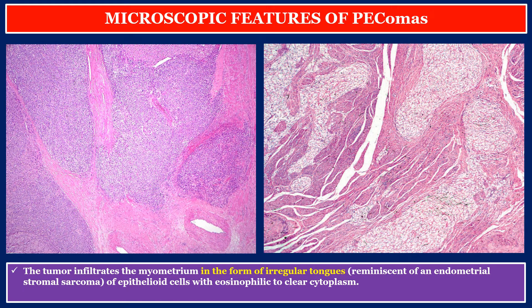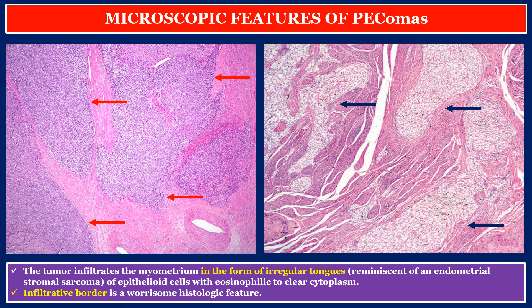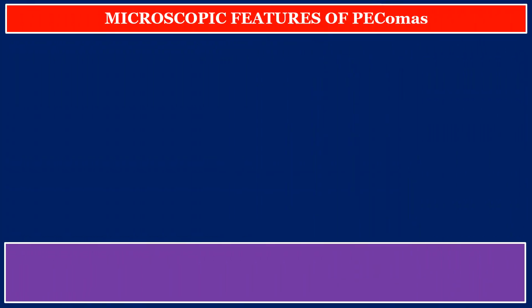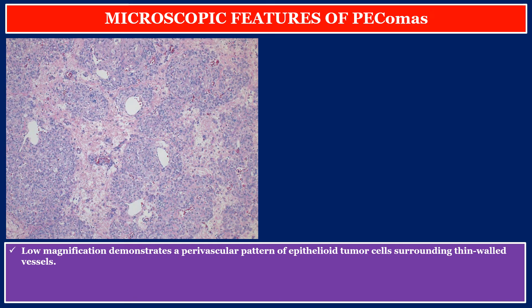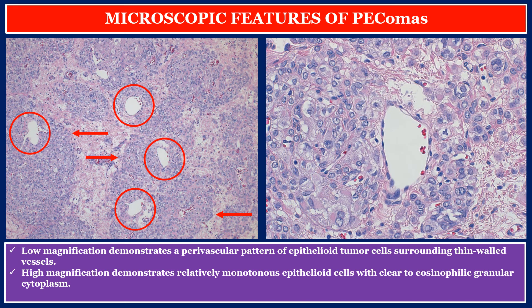Microscopic features of PEComas. The tumor infiltrates the myometrium in the form of irregular tongues, reminiscent of an endometrial stromal sarcoma, of epithelioid cells with eosinophilic to clear cytoplasm. Infiltrative border is a worrisome histologic feature. Low magnification demonstrates a perivascular pattern of epithelioid cells surrounding thin-walled blood vessels.